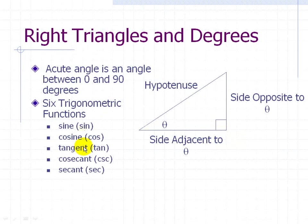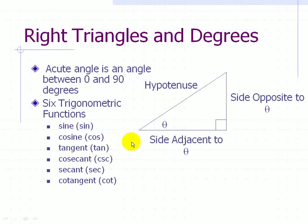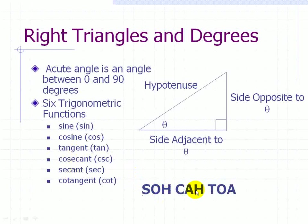We also have the cosecant, the secant, and the cotangent of theta. The sine of theta is the opposite side over the hypotenuse. The cosine is the adjacent side over the hypotenuse. The tangent is the opposite side over the adjacent side. The cosecant is 1 over the sine, the secant is 1 over the cosine, and the cotangent is 1 over the tangent.